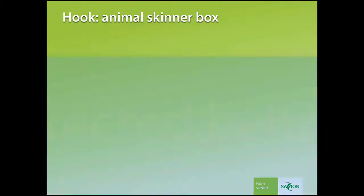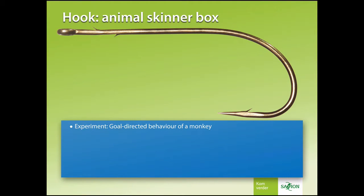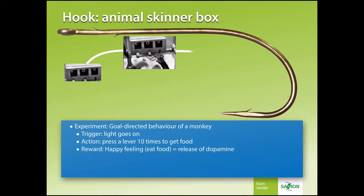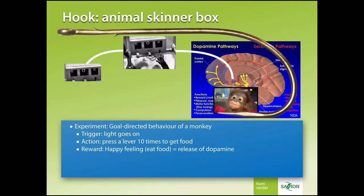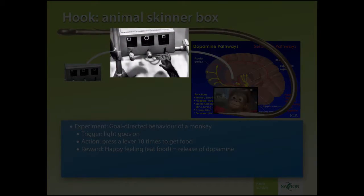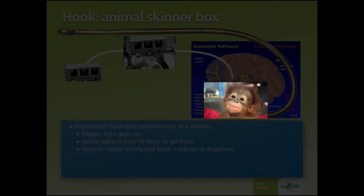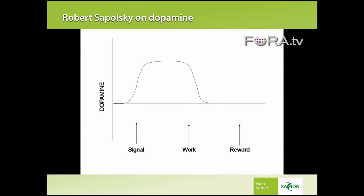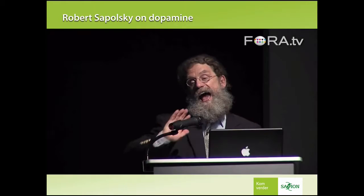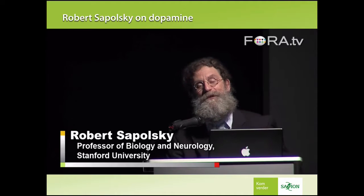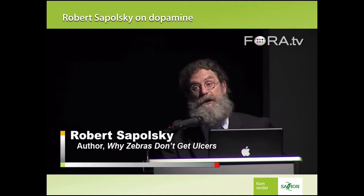Let's combine that experiment with a monkey in a Skinner box. This monkey has been trained that when a little light comes on, it can get food by pressing a lever ten times. It understands the task: a signal, then the monkey does the work, then with a delay it gets the reward. Everyone initially thought dopamine would go up after the reward — but that's not when it goes up. It goes up when the signal comes on. Dopamine is not about pleasure. It's about the anticipation of pleasure. It's about the pursuit of happiness rather than happiness itself. If you block that rise of dopamine, you don't get the behavior.